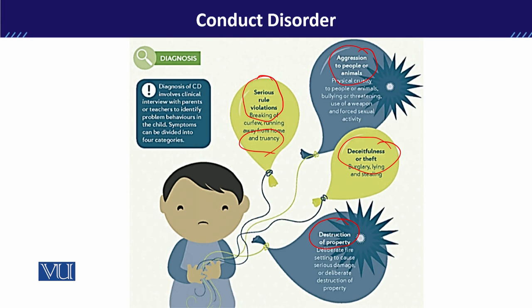जब भी बच्चा आपके पास आए, आपको clarify करना होगा कि उसका behavior age 10 से पहले शुरू हुआ है या age 10 के बाद। इसके साथ severity level का भी ध्यान रखना होता है — conduct disorder mild, moderate, या severe हो सकता है। Mild तब कहते हैं जब minimum symptoms हों; severe तब जब पूरा DSM-5 criteria fulfill हो; और जो बीच में हो वो moderate कहलाता है।